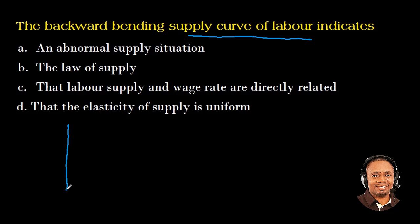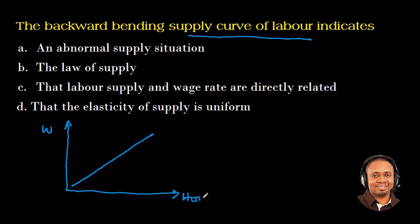The normal supply curve of labour would go this way. This is the wage rate axis and this is the hours worked axis. So under normal circumstances, once the wage increases, the worked hours would also increase.